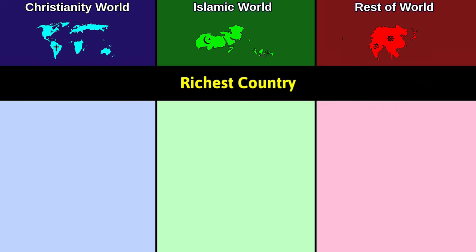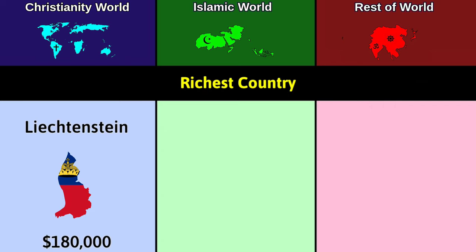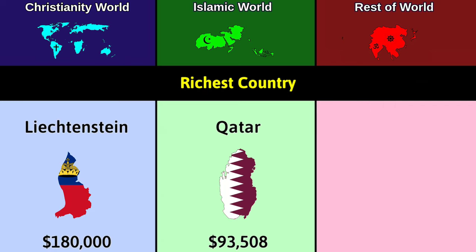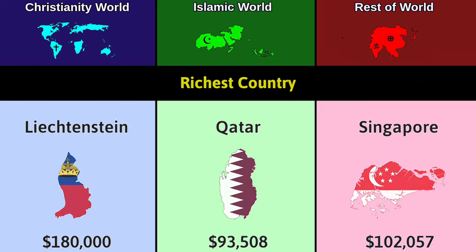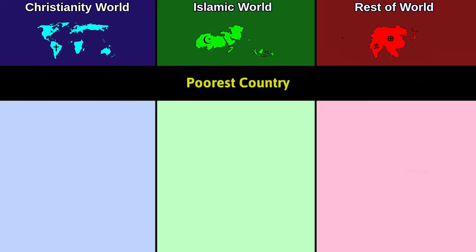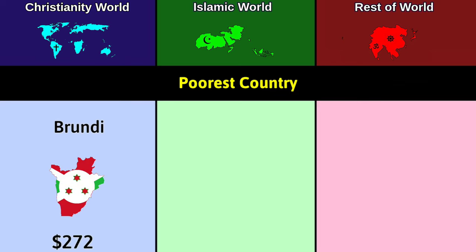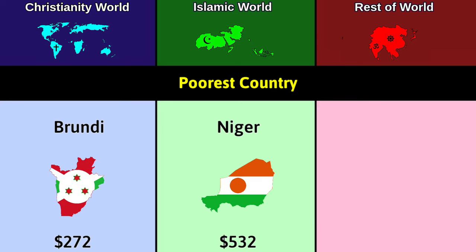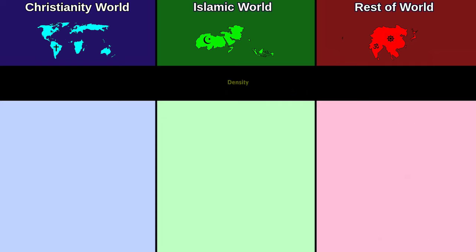Richest country by GDP per capita: Christianity — Liechtenstein at $180,000; Islam — Qatar at $93,508; Rest — Singapore at $102,057. Poorest country by GDP per capita: Christianity — Burundi at $272; Islam — Niger at $532; Rest — Myanmar at $1,170.